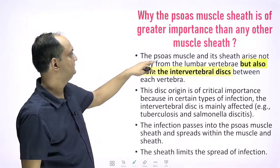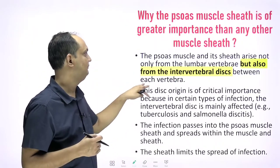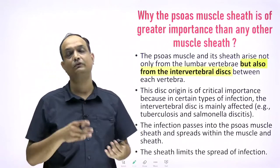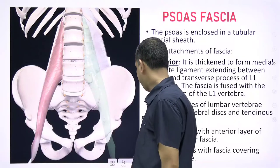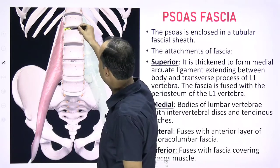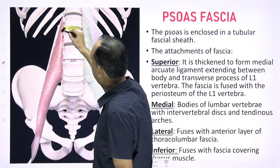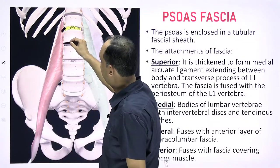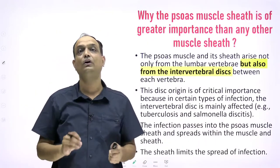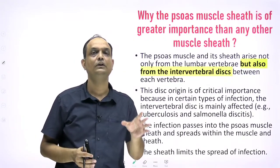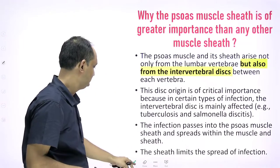The psoas muscle and its sheath arise not only from the lumbar vertebrae but also from the intervertebral disc between each vertebra. In this image you can see the area of the intervertebral disc where the slip of the psoas muscle takes origin from the adjacent vertebrae and from the intervertebral disc. This disc origin is of critical importance, which is why the fascia and the origin of the muscle also become important.